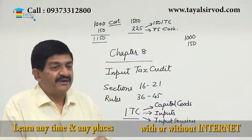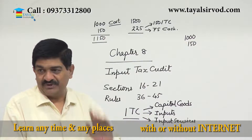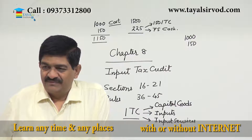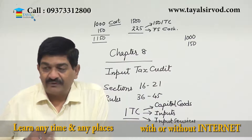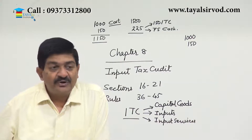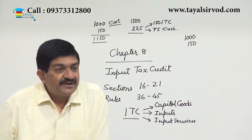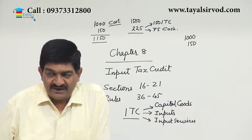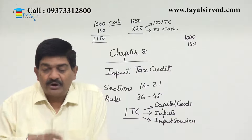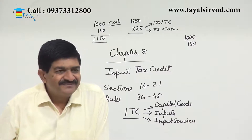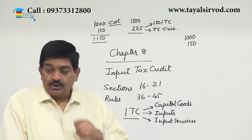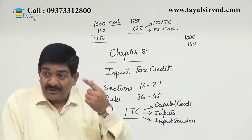So the basic conditions are: number one — document; number two — possession; number three — in relation to business. If these and other prescribed conditions are fulfilled, only then credit can be availed. There is also a time limit within which credit has to be availed — it is not unlimited. You cannot find an invoice which is two years old and avail the credit today. The maximum time limit prescribed for availing the credit is one year from the date of invoice in relation to the supply — whether for capital goods, inputs, or input services.